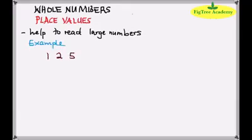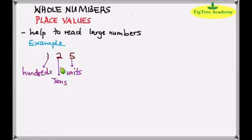For example we have 125. The pronunciation of 125 is according to the place values of the digits. Here it means 5, these are units. 2, tens. 1, these are hundreds. So we have units, tens, hundreds.